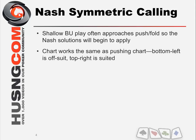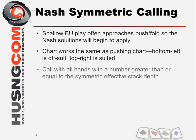The chart works the same as always: bottom left is offsuit, top right is suited. We want to call with all hands with a number greater than or equal to the symmetric effective stack. Thankfully there are no stars, regions, or anything complicated — just call with the hands that have a number greater than the stack size.